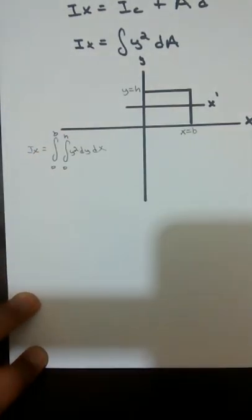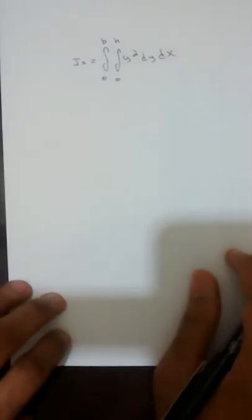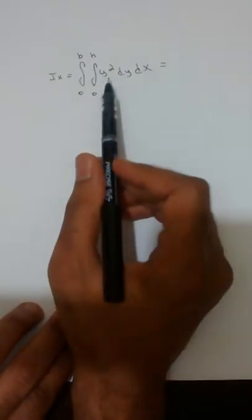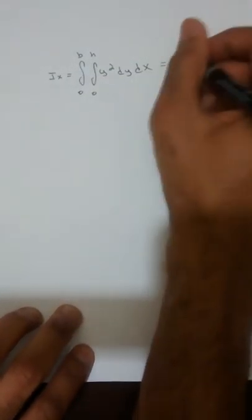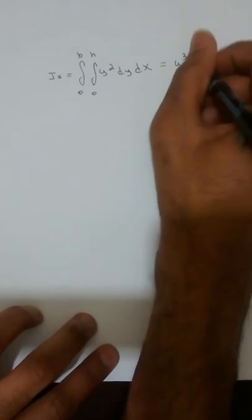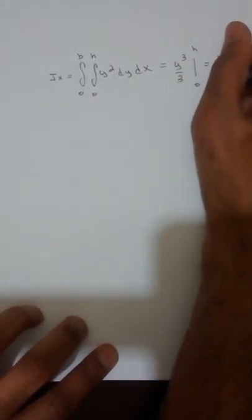So this is a double definite integral that we must solve. We have I sub x equal to the double integral from zero to b and zero to h of y squared dY dx. We first integrate with respect to y: y squared has anti-derivative y cubed over 3. We evaluate it from zero to h, which gives us h cubed over 3.